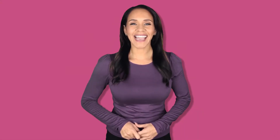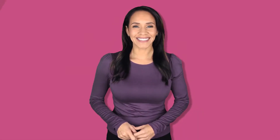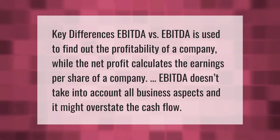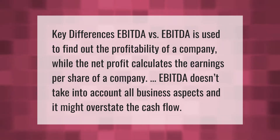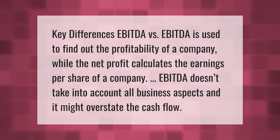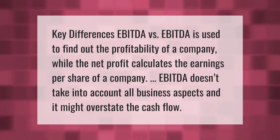Key differences: EBITDA versus net profit. EBITDA is used to find out the profitability of a company, while net profit calculates the earnings per share of a company. EBITDA doesn't take into account all business aspects and it might overstate the cash flow.